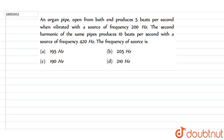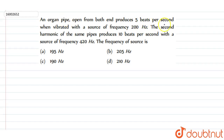The question is that an organ pipe open from both ends produces 5 beats per second when vibrated with a source of frequency 200 Hz. So if the source frequency is 200 Hz, then the organ pipe produces 5 beats per second.